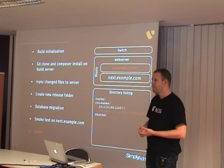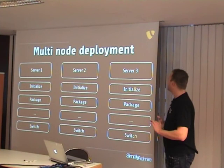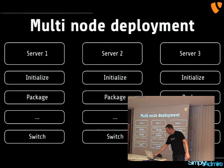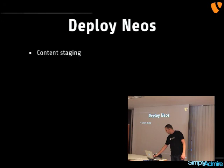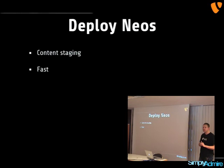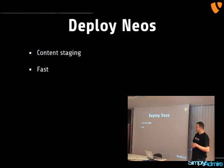If you think about a database migration happening just before switching the symlink, it could happen that in your migration scripts you remove a database field. Try to do this in multiple steps: first remove the functionality in one change, do a deployment, and in the next change remove the database field — in this case it will not break. On a multi-node deployment with three servers, it will first run the initialized stage on all servers, then the package stage, and then continue. So you can use Surf for deploying multiple nodes at the same time.